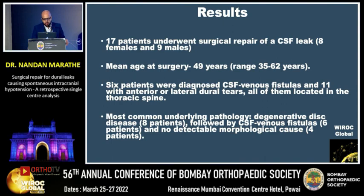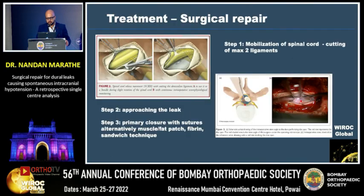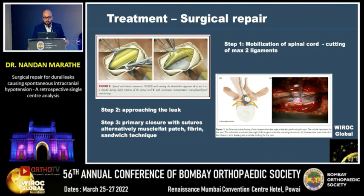In terms of the underlying pathology, degenerative disc disease was seen in eight patients, CSF venous fistula in six patients, and in four no detectable morphological cause could be found. In this sample case you can see we mobilize the spinal cord by cutting a maximum of two dentate ligaments, then approach the leak. In our series we primarily repaired it with suture; alternatively you can use muscle fat pad grafting or fibrin sealant.